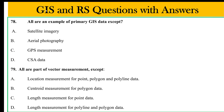All are an example of primary GIS data except: A. Satellite imagery, B. Aerial photography, GPS measurement, C. Satellite imagery. The answer relates to distinguishing primary GIS data from secondary GIS data input.